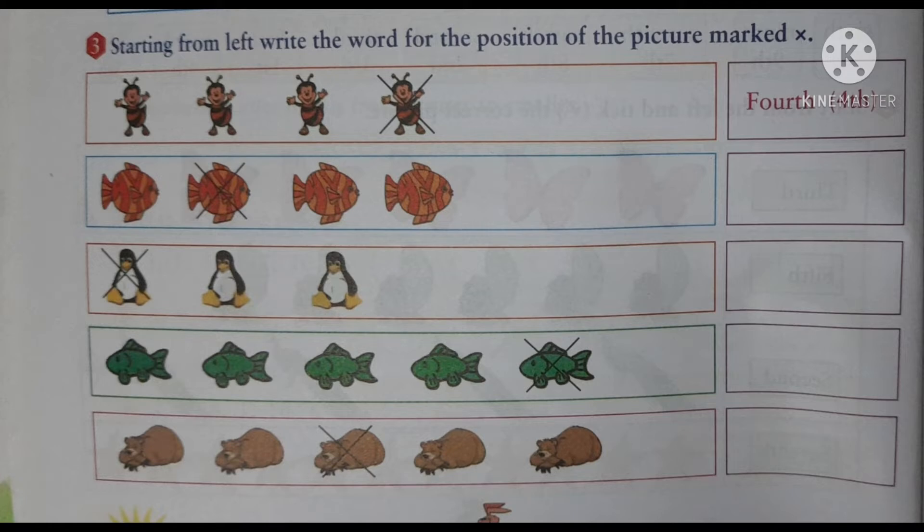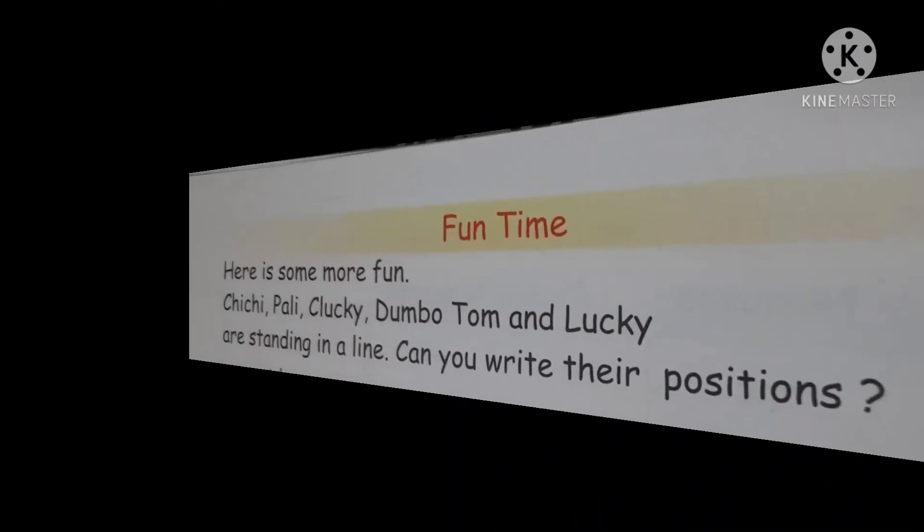Now the next one. What is the question or instruction given? See, starting from left, write the word for the position of the picture marked cross. So which picture is crossed, that particular picture position you have to see. Understood?